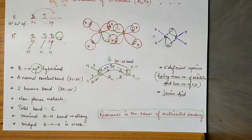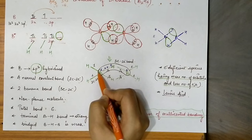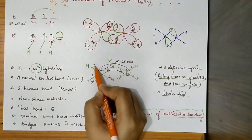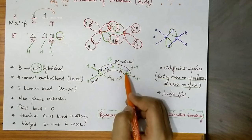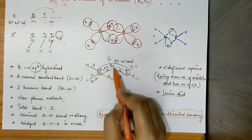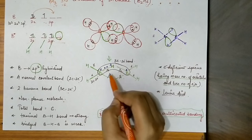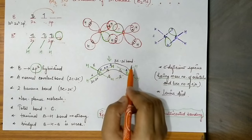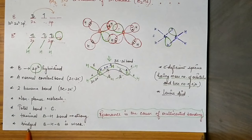The terminal boron–hydrogen bond is stronger because it has a bond order of 1. The bridge boron–hydrogen bond has a bond order of only 1/2. So the bridge boron–hydrogen bond is weaker.